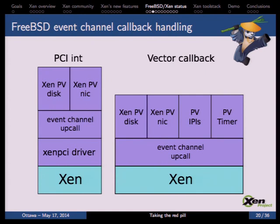On previous FreeBSD versions we used a PCI interrupt to get events from Xen — the interrupt was global to the OS, we could not inject interrupts into specific CPUs. Xen would inject an interrupt received by the Xen PCI driver, which delivered it to the event channel callback and finally to PV disk or PVNIC interfaces. On FreeBSD 10 we added support for the vector callback, giving us an IDT vector that allows delivering interrupts to different vCPUs. Xen injects an interrupt directly to the event channel callback code, and we can also use it to inject interrupts for PV timers and PV APICs.